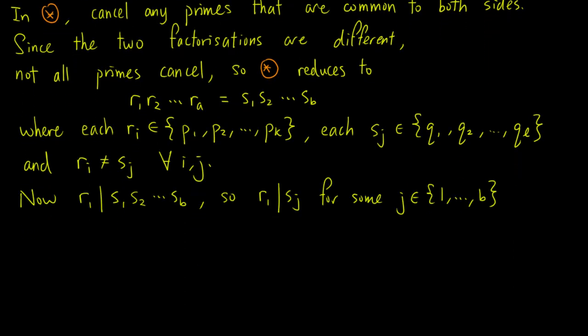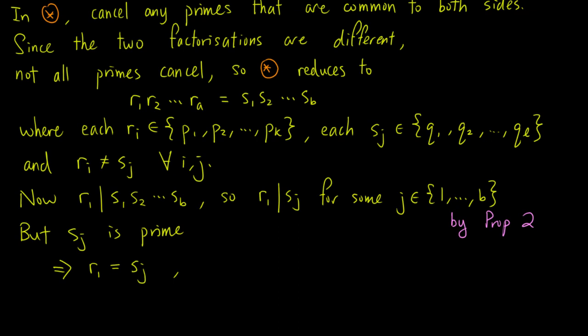Now r1 divides the right-hand side, that is, s1 up to sb, so r1 divides sj for some j in the set 1 to b, using the second proposition. But sj is prime, meaning its only divisors are 1 and itself. So r1, which is prime and thus not equal to 1, must equal sj. This is a contradiction, because we assumed that none of the ri's are equal to any of the sj's.